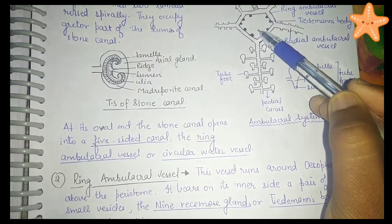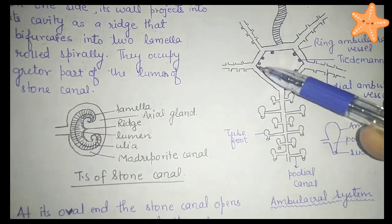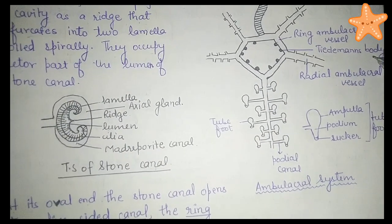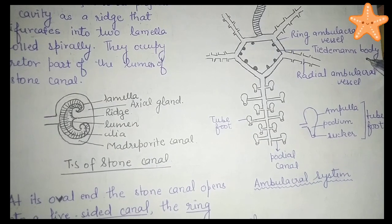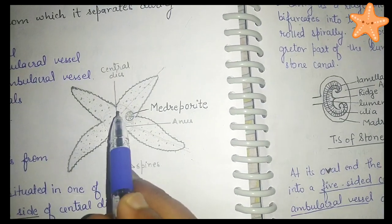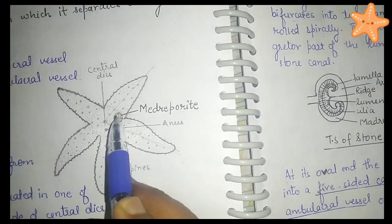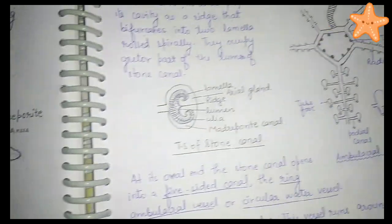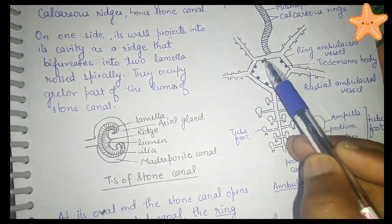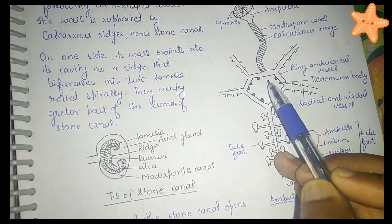The ring ambulacral vessel bears on its inner side pairs of small vesicles known as Tiedemann's bodies, or racemose glands. These are present in each interradius. The central disc has five interradii, and in each interradius a pair of Tiedemann's bodies is present, but the interradius on the other side of the stone canal has only one — making them 9 total in number.